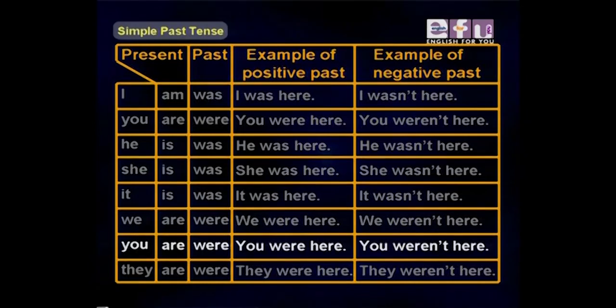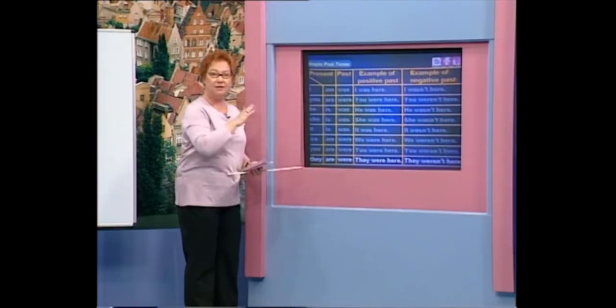You, you are, you were, you were here, you weren't here. And they, they are, they were, they were here, they weren't here. So here's an example of how it looks in a chart.